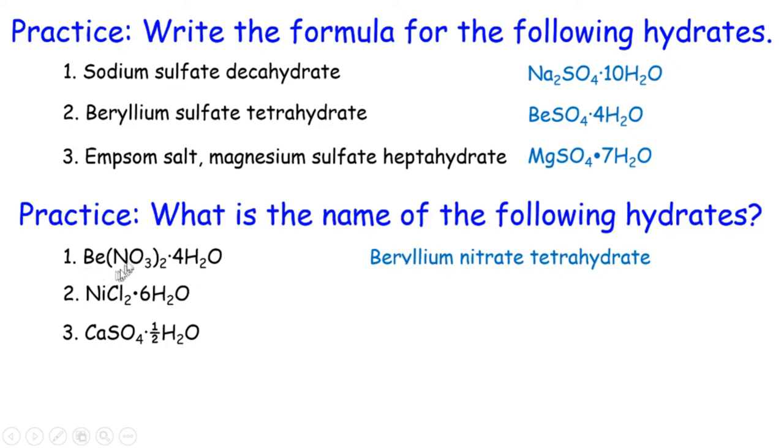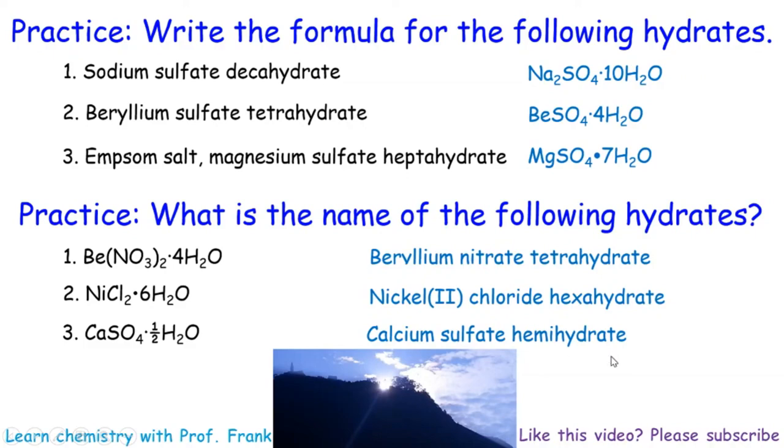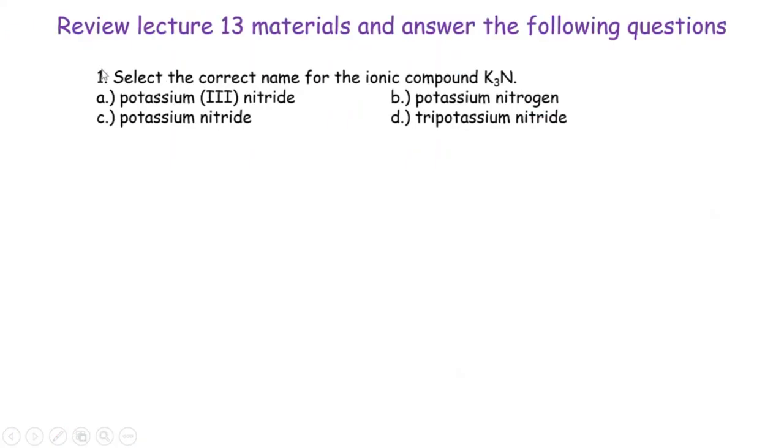Now from formula to names. That's beryllium nitrate tetrahydrate. Number 2, nickel, that's a transition metal and each chloride carries negative 1, therefore nickel has to carry a charge of 2+. So therefore nickel(II) and then the ion's name chloride, prefix 6 which is hexahydrate, nickel(II) chloride hexahydrate. And this one should be called calcium sulfate, one-half right here we call that hemi, so calcium sulfate hemihydrate.